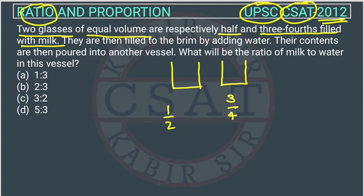They are then filled to the brim by adding water. Now, this is half filled. 1 by 2 means half filled. So what they are doing? They are adding water in this. So how much will be water? 1 by 2 is already filled, so it means half the glass already has milk. So water will be half.